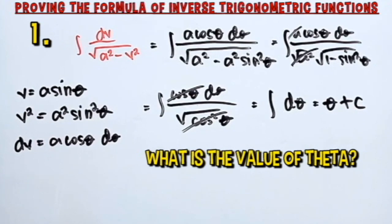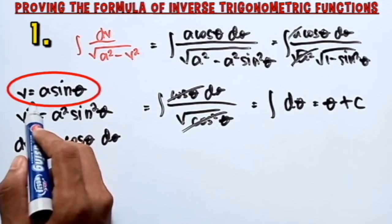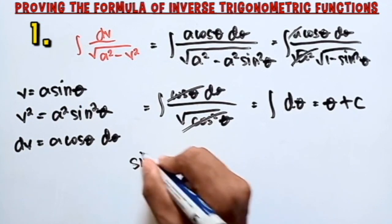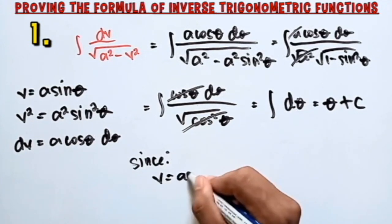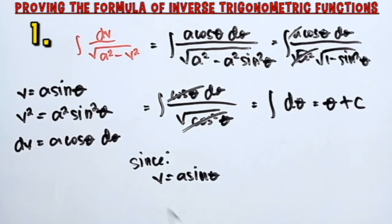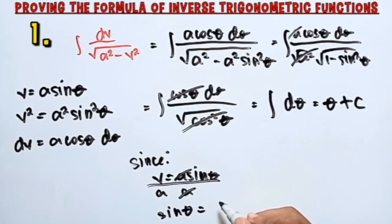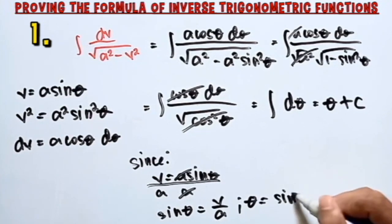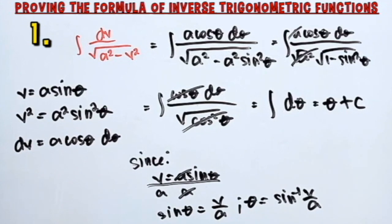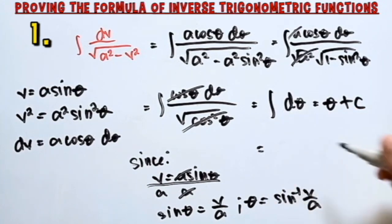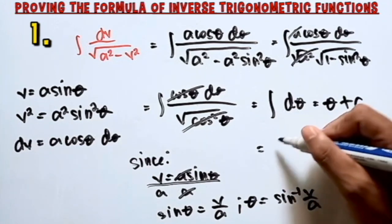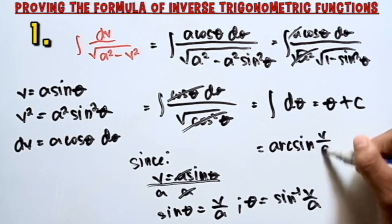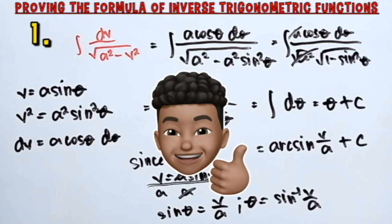What is the value of θ? Going back to the first equation, v = a sinθ. Dividing both sides by a, sinθ = v/a, and the a cancels. Therefore θ = arcsin(v/a). To get the final answer, we input this value of θ, giving arcsin(v/a) + c. Don't forget to add the constant of integration. This is our final answer.